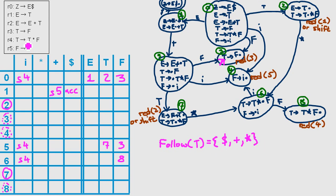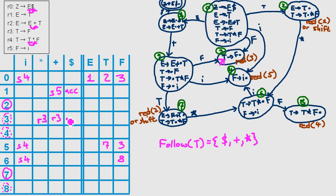Since this reduces a T, we can only apply the rule for all characters in the follow set of T, which is: dollar, plus, and star. Just a short explanation: after T comes a star; after T comes an E, and after E comes a plus; and after another E comes a dollar sign. For more information on the follow function, watch the video about it. For us, this means rule number three will be applied at those positions.